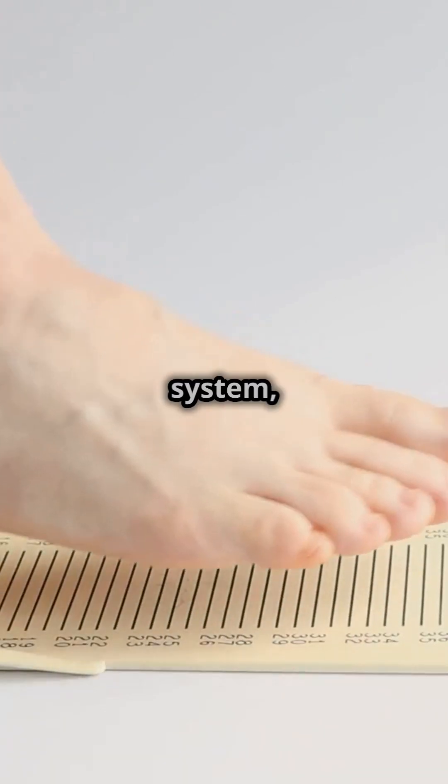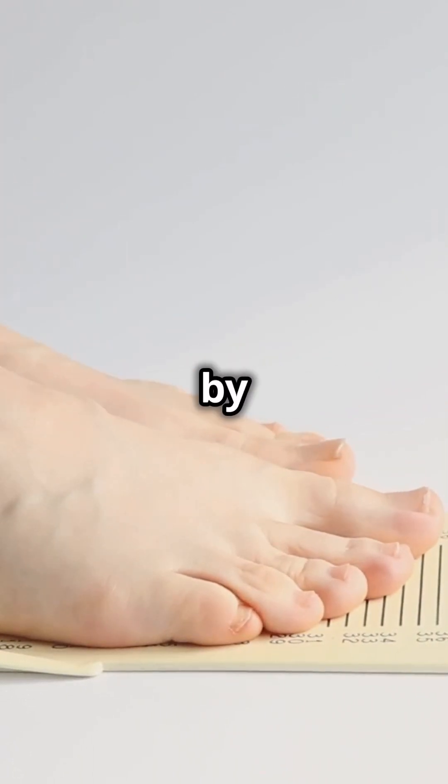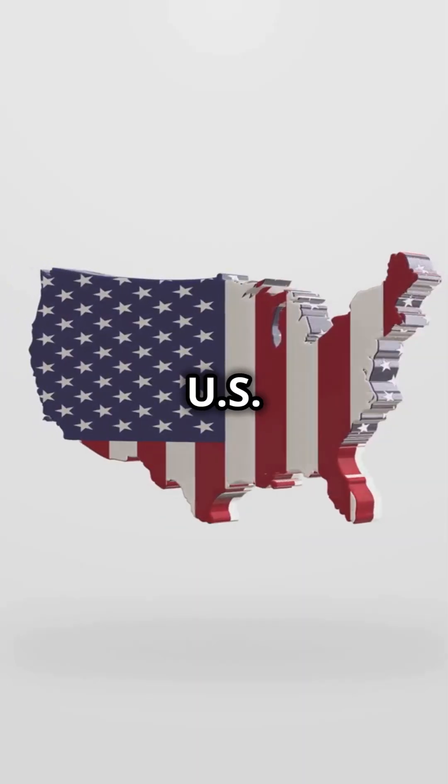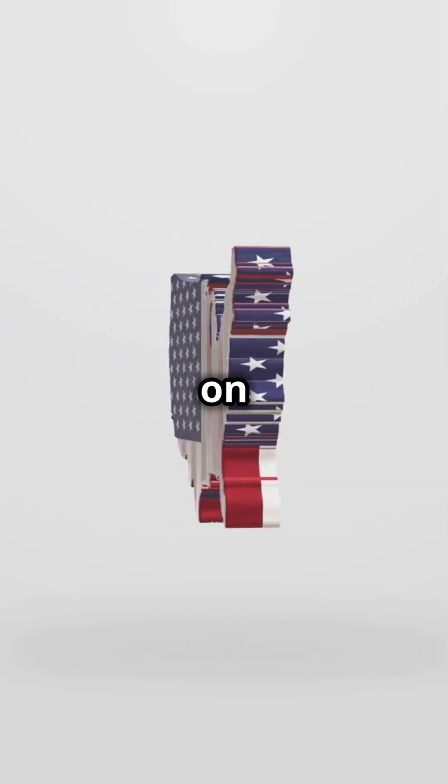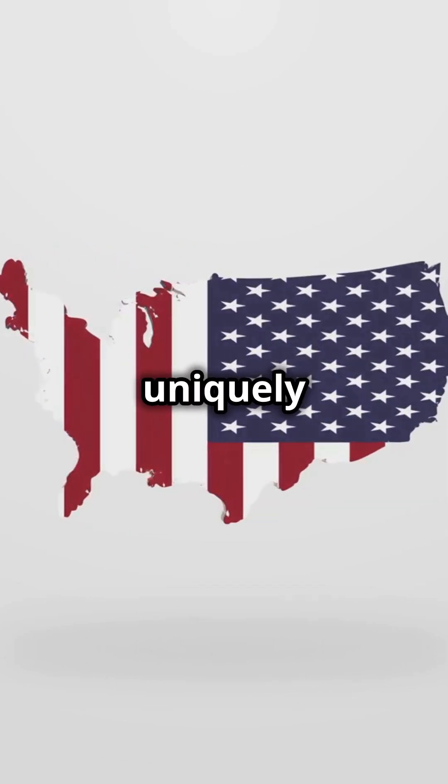Fun fact. The British imperial system, which influenced American measurements, was standardized in 1824 by the British Weights and Measures Act. And did you know, the U.S. customary system is actually based on older British units, but with some American twists, making it uniquely ours.